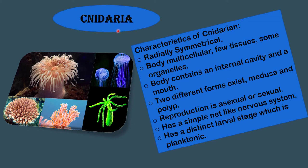The second phylum is Cnidaria. Cnidarians are radially symmetrical, multicellular animals with few tissues and some organelles. The body contains an internal cavity and a mouth. Two different forms exist: Medusa and Polyp. Reproduction is asexual or sexual. They have a simple net-like nervous system and a distinct larval stage which is planktonic.